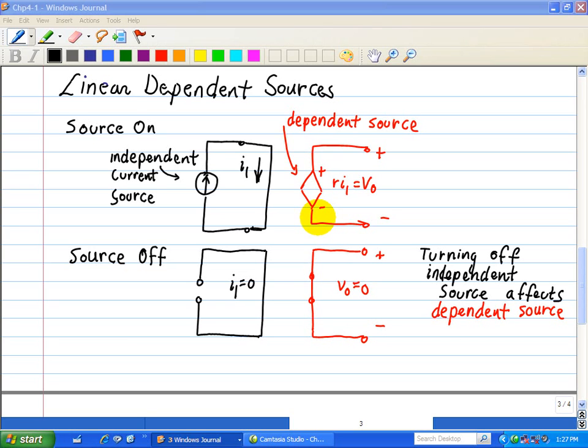Here are the consequences of these dependencies. When the independent current source is on, KCL requires I₁=Is. Through current controlled source action, the dependent voltage source is on and its output is V₀=RI₁.